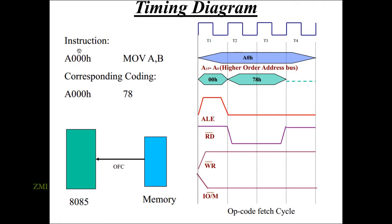A0 carries the data. It is called corresponding coding — the data has a corresponding code. We have set 7, 8, 0 — the protocol is hexadecimal 78h.